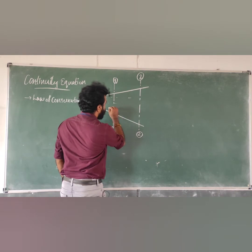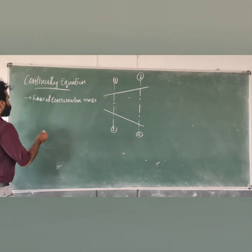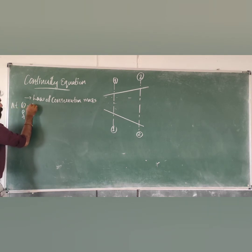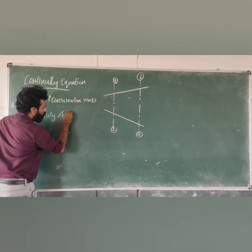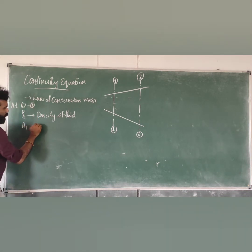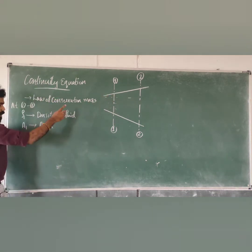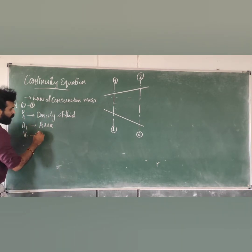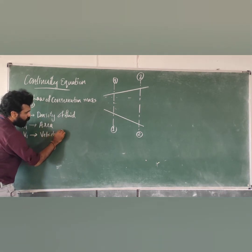Let's talk about fluid flow in a channel with two sections: section 1-1 and section 2-2. In section 1-1, rho-1 is the density of fluid, A-1 is the area, and V-1 is the velocity of fluid in that section.